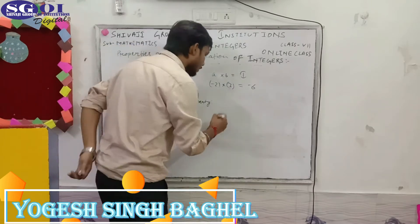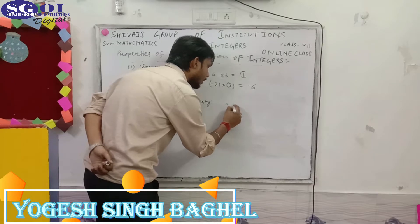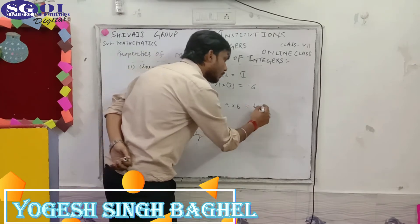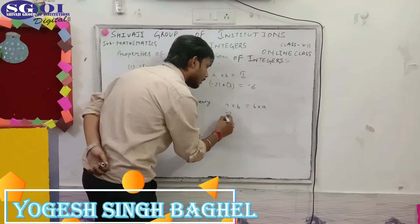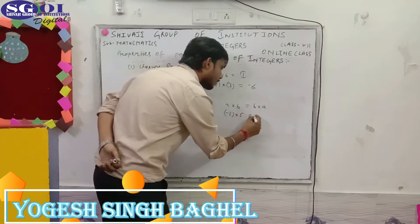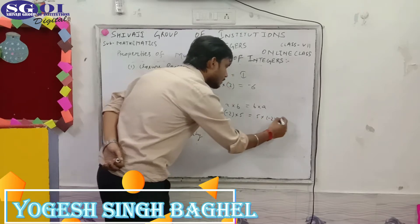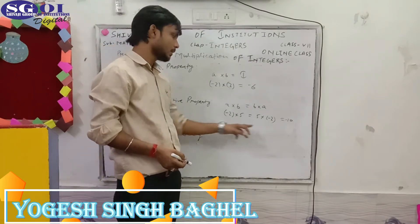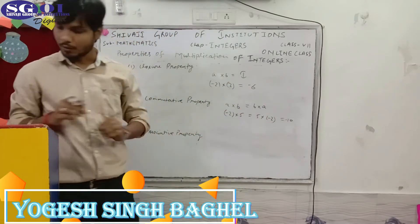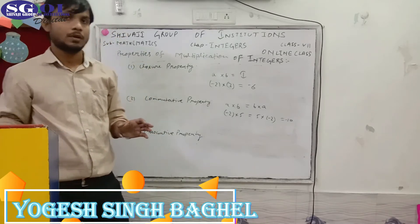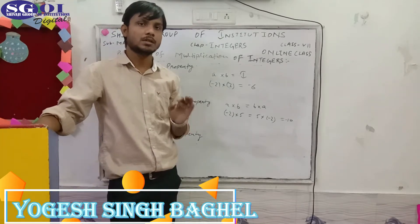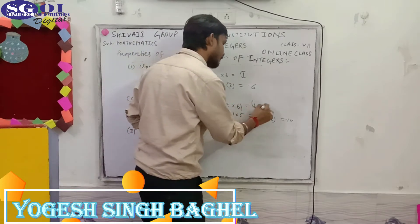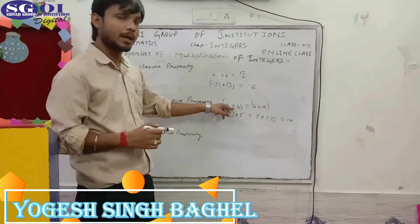Commutative property: according to commutative property, if you take integers a and b, then a × b will be equal to b × a. For example, (-2) × 5 equals 5 × (-2), which is -10. So multiplication is commutative — if a and b are integers, then a × b = b × a. Here, cross means multiply.